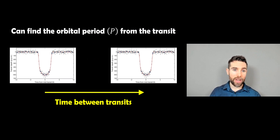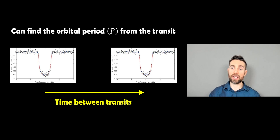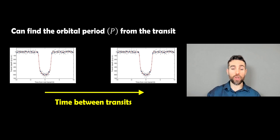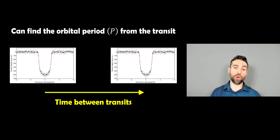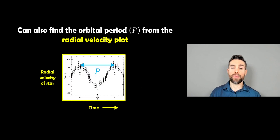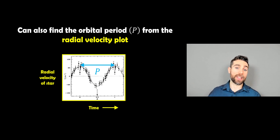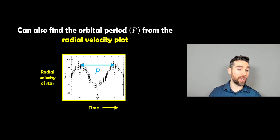There are a few ways to get the period. We can get it from the radial velocity plot, but also from the transit: watch the planet transit in front of the star, get a dip, wait for the next one, and the time between those two dips gives the orbital period. So the time between transits is another way of getting the orbital period. Because the star and planet share the same orbital period, peak to peak in the radial velocity plot also gives us the orbital period.